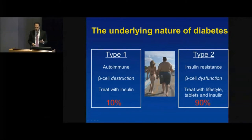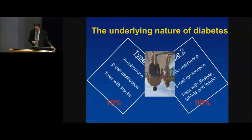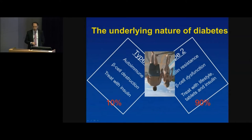It was thought that people with type 1 are younger and those with type 2 are older when they develop diabetes — but that's not true anymore. We now see people developing type 1 in their 50s and 60s, and children developing type 2 diabetes, largely related to increased body fat and lifestyle factors. So we can't assume type based on age alone — the lines have blurred.